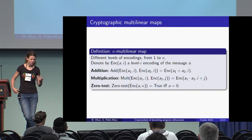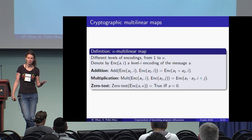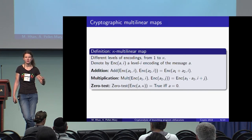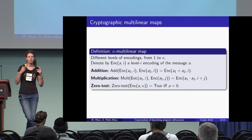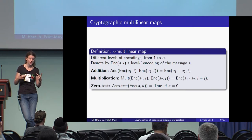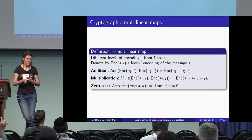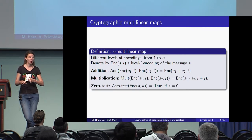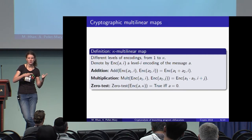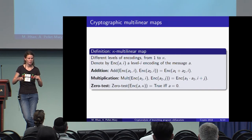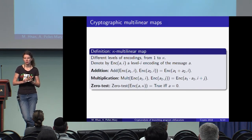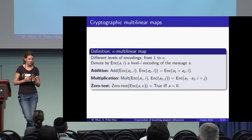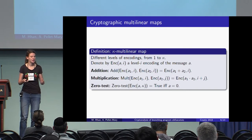A cryptographic multilinear map is indexed by a parameter kappa denoting the maximum encoding level, with encodings at levels 0 to kappa. Three public procedures are required: adding two encodings at the same level gives an encoding of the sum at the same level; multiplying two encodings gives an encoding of the product whose level is the sum of the two levels; and a public zero-test procedure determines whether an encoding at the maximum level is an encoding of zero.